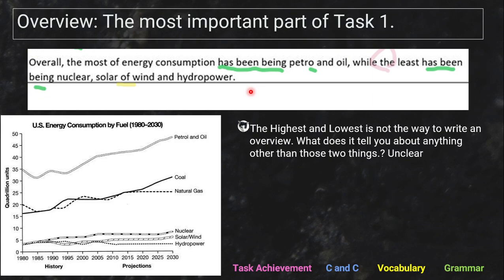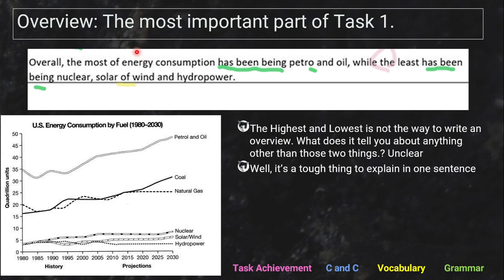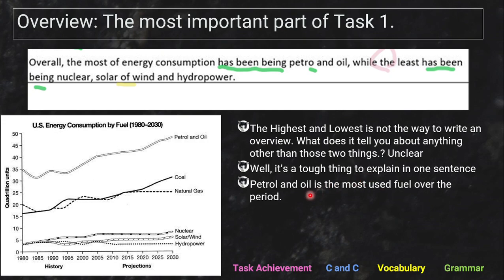But does this really tell you anything about the graph as a whole? What's the trend? It starts here, goes up — starts here, goes up — starts here, goes mostly up. The overview should answer: is energy use increasing or decreasing? Yes, petrol and oil is obviously the most, but the grammar — 'has been being' — doesn't make any sense. You'd probably want to say something like 'petrol and oil is the most used fuel over the period.'